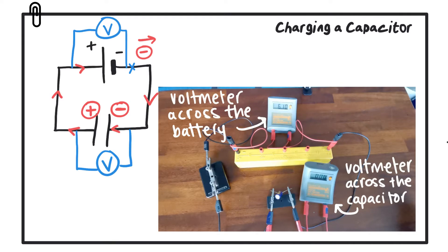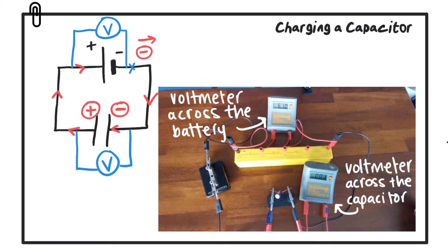As you can see here, as soon as you close the switch in the circuit, then the voltmeter that's connected across the capacitor, the value will jump very quickly to match that same value that's on the voltmeter across the cell.